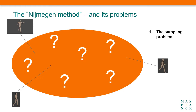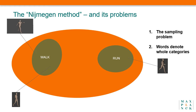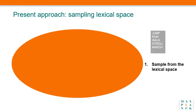For all its advantages, there are two serious problems with the Nijmegen method. First, how do we know that we are sampling the right regions of the space? After all, this space is infinitely large and each video clip is just one tiny point in that vast space — we can easily miss out on regions that aren't covered by our lexicon. The second, more general issue is that words do not just denote individual instances of motion. Instead, words denote whole categories of actions. We can think of words as referring to whole regions in our conceptual space. Wouldn't it make sense, then, to get insights directly on the categories themselves?